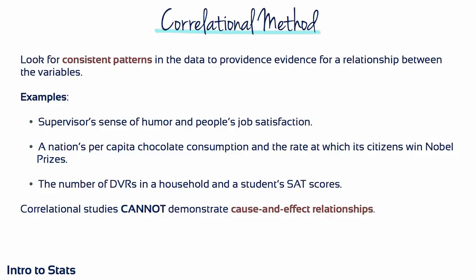Maybe the work environment — very relaxed and comfortable — is the cause of both the sense of humour and the job satisfaction. Consider the relationship between the number of DVRs in a household and a student's SAT scores. Does owning more DVRs cause a better score, or is a third factor responsible? A well-balanced, functional family with high socio-economic status is probably going to have more DVRs and provide more educational resources than families who struggle financially. Correlational studies can only tell us a relationship exists; they cannot demonstrate cause and effect.